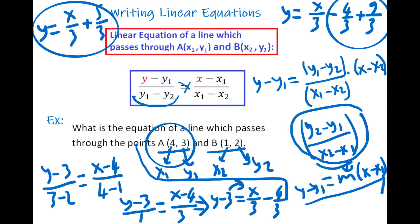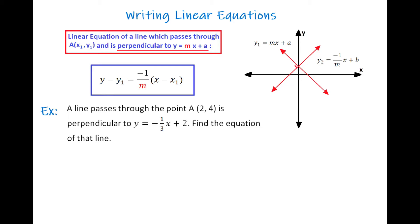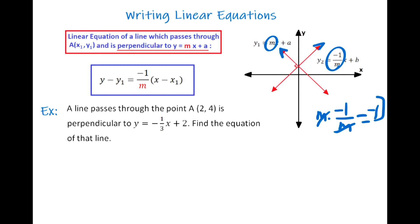As you can see, we solved the question using just one step. I definitely recommend you write down this equation to use in such cases. This might be another case you may need: writing a linear equation given a perpendicular line. Suppose our equation is y1 and there is a perpendicular line y2. There is a connection between those slopes — the multiplication of the slopes of perpendicular lines is negative 1. So m times negative 1 over m equals negative 1, and their multiplication is negative 1.